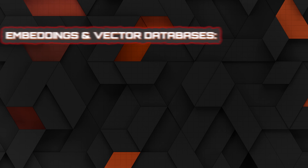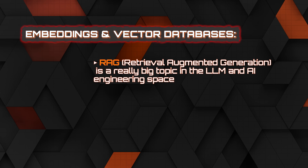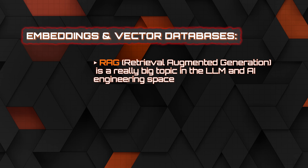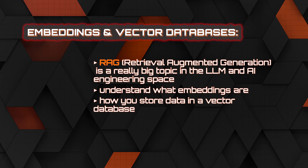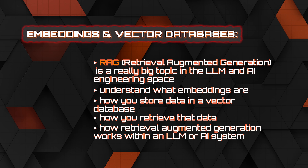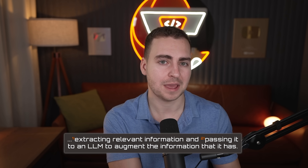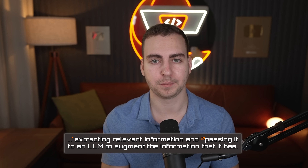The next thing on my list is embeddings and vector databases. RAG, or retrieval-augmented generation, is a really big topic in the LLM and AI engineering space. You need to understand what embeddings are, how you store data in a vector database, how you retrieve that data, and how retrieval-augmented generation works within an LLM or AI system. Simply put, this means extracting relevant information and passing it to an LLM to augment the information it has, so it can give you a better reply — it's one of the most practical use cases of LLMs, allowing you to feed it your own custom data when it needs it.